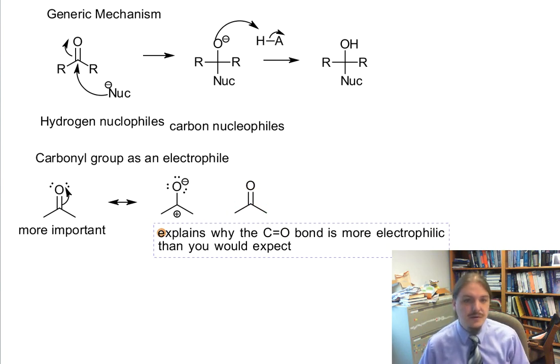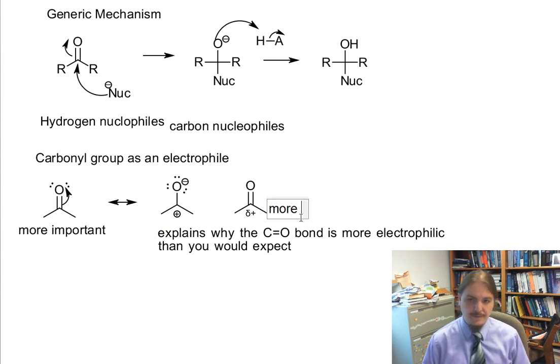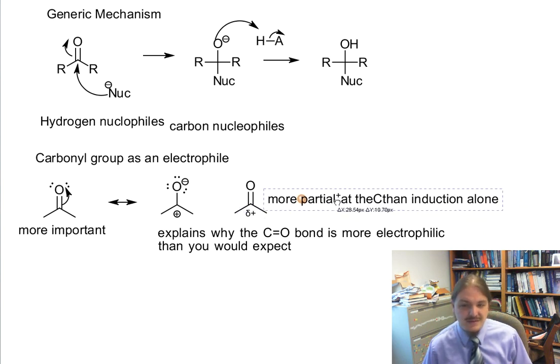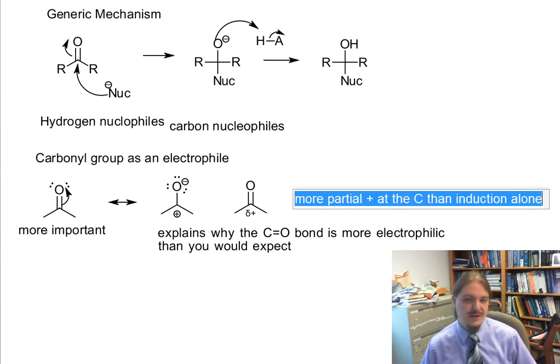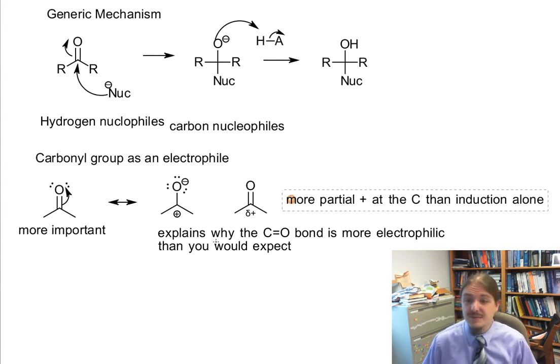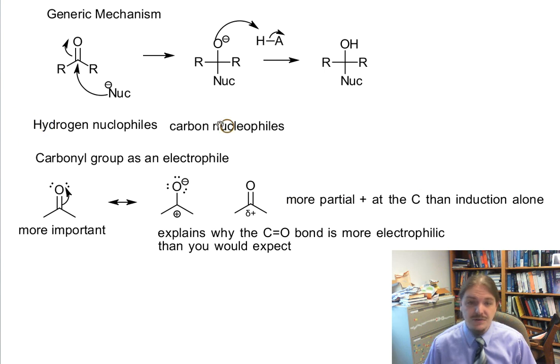more partial plus at the carbon than electronegativity differences alone or induction alone should be able to explain. So carbonyl group is actually a reasonable electrophile for a number of types of nucleophiles. And as I mentioned, we're going to focus in this video series on hydrogen nucleophiles and carbon nucleophiles, starting with the hydrogen nucleophiles in the next video. So thank you for watching.